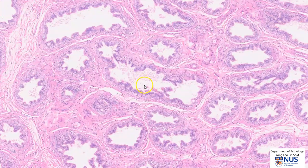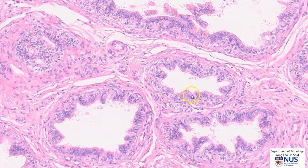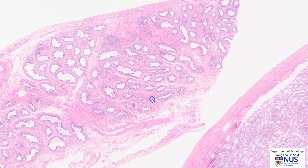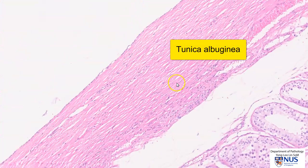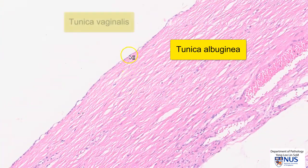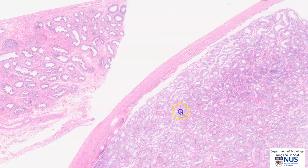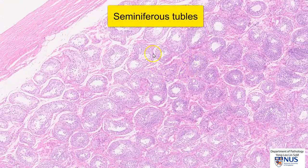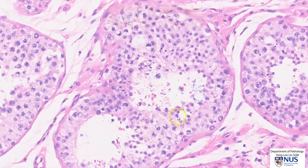Let's have a very quick look at the epididymis, and we can see that there are many tubules that are lined by these tall columnar cells with long stereocilia. Moving back to low magnification, this fibrous structure here is the tunica albuginea, and this is in turn lined by the tunica vaginalis. Coming in to the testicular parenchyma, we are looking now at seminiferous tubules in which there is ongoing spermatogenesis.